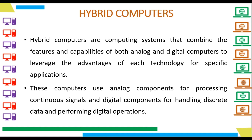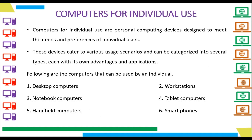So this was all about types of computers. Now we will see computers that can be useful for an individual. Computers for individual use are personal computing devices designed to meet the needs and preferences of individual users. These devices cater to various usage scenarios and can be categorized into several types, each with its own advantages and applications. Following are the computers that can be used by an individual: desktop computers, workstations, notebook computers, tablet computers, handheld computers, and smartphones. We will study size, performance, and advantages of all these computers.